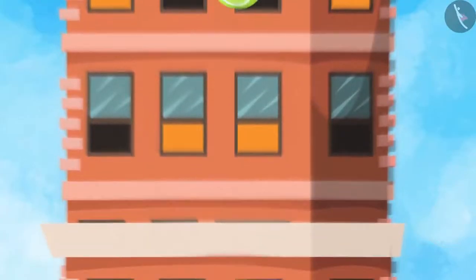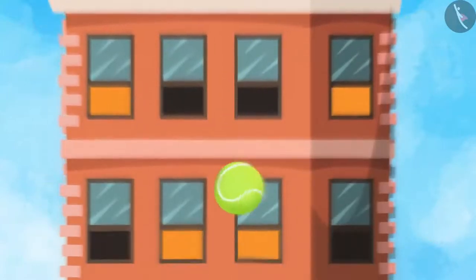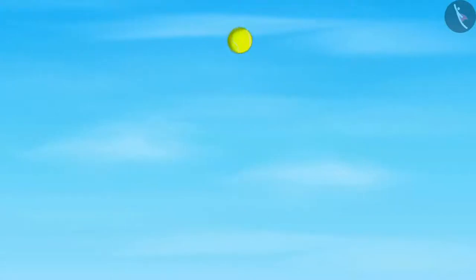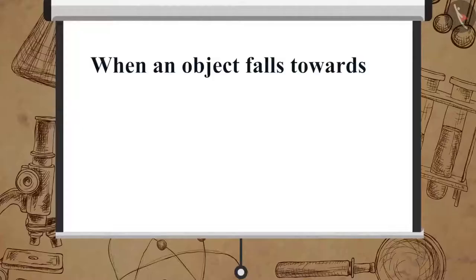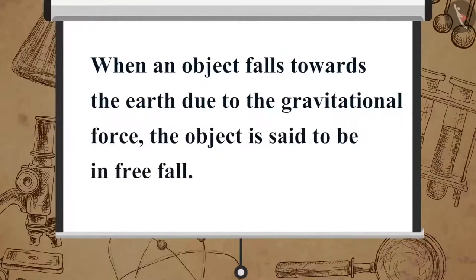Almost everything that goes up falls down. Let's start by doing a simple experiment to understand free fall. Take a ball and throw it upwards. The ball goes to a certain height and then starts falling. The earth's gravitational force is attracting the ball, and so it moves downwards. When an object falls towards the earth due to the gravitational force, the object is said to be in free fall.